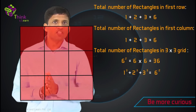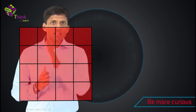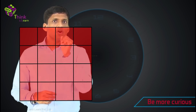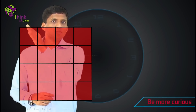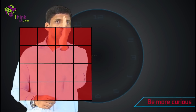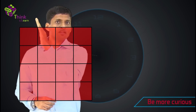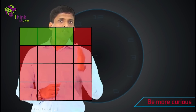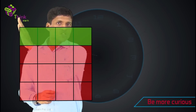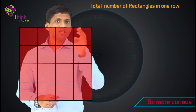Just to help you understand further, let's do this in a 4 by 4 grid. So manually if I take this 4 by 4 grid — first row: how many 1 by 1? It's 1, 2, 3, 4. How many 2 by 1? It's 1, 2, 3. How many 3 by 1? It's 1, 2 as it's getting highlighted. How many 4 by 1? Just 1. So total number of rectangles in this particular row will be 1 plus 2 plus 3 plus 4 equal to 10.